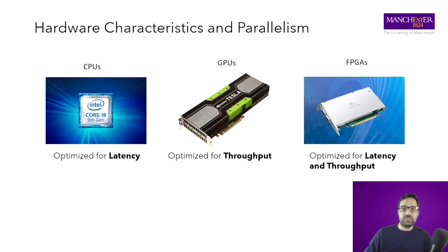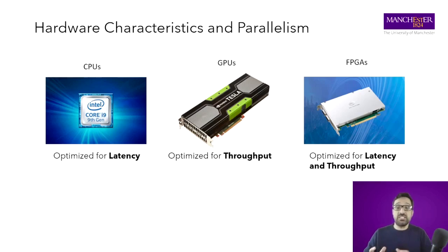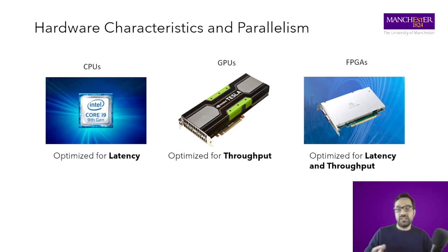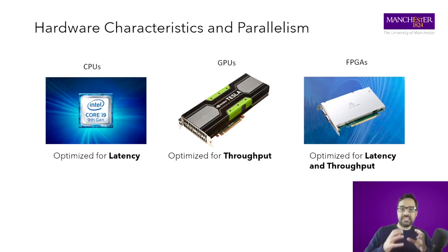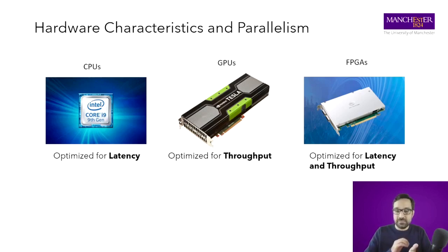Let me introduce some terminology. There are three different architectures: CPU, GPU, and FPGA. Each architecture is optimized for different types of workloads. CPUs are optimized for low-latency applications. GPUs are optimized for high throughput. FPGAs offer a mixture — very low latency and very high throughput. The FPGA works by physically wiring your application into hardware, so you have exactly the pieces you need. That's why you get very low latency and can get higher throughput by replicating units.